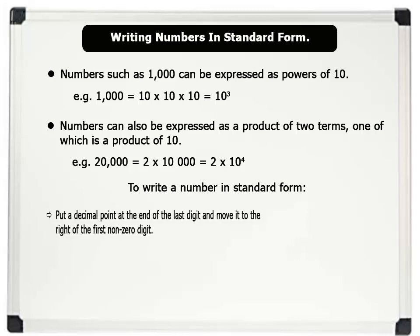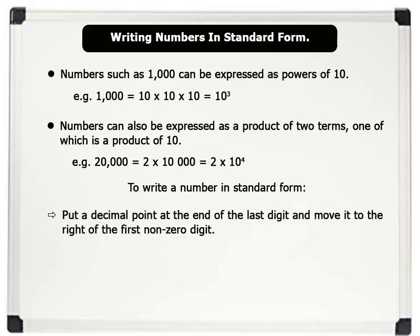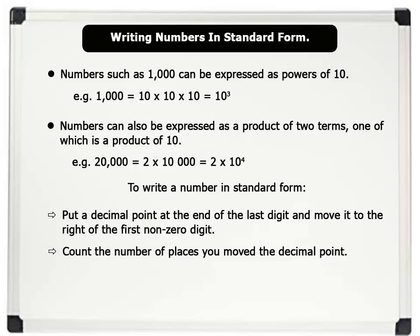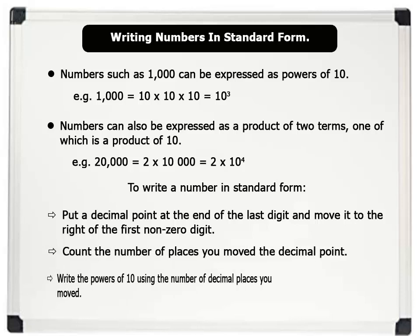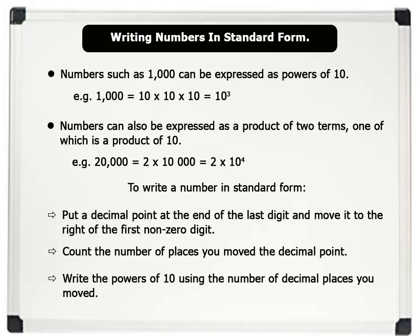To write a number in standard form, we do the following: step 1, put a decimal point at the end of the last digit and move it to the right of the first non-zero digit; step 2, count the number of places you move the decimal point; step 3, write the power of 10 using the number of decimal places you moved. Let us now see an example.